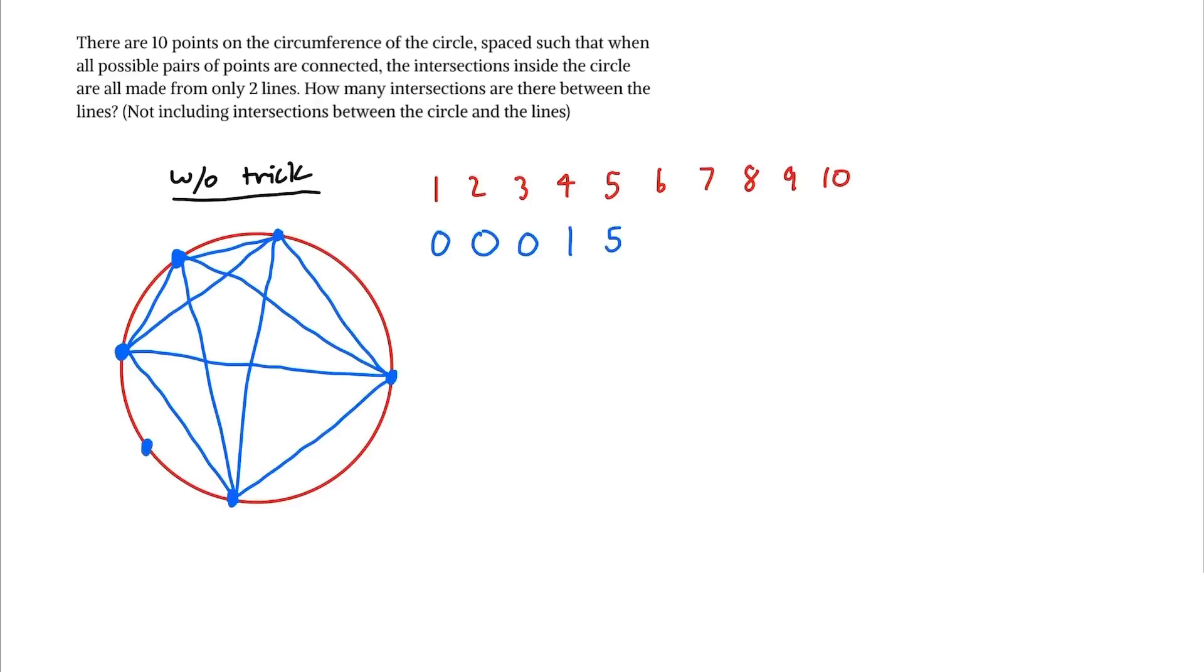Now with six points we can count one, two, three, four, five, six, seven, eight, nine, ten, eleven, twelve, thirteen, fourteen, fifteen intersections. Now with seven points we can count all intersections, but seriously we can count one, two...